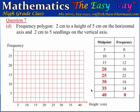We now plot the following coordinates — midpoint paired with frequency: (5, 0), (10, 3), (15, 12), (20, 16), (25, 22), (30, 18), (35, 14), and (40, 0). These are the coordinates of all the points to be plotted for the frequency polygon.